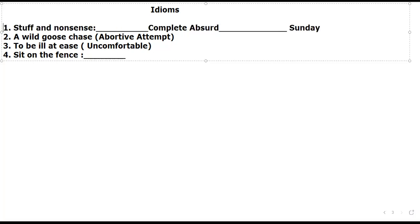To be ill at ease — you have to take a decision. If you don't take a decision, then you are sitting on the fence, avoiding making a decision. For example, the PDM coalition government is sitting on the fence, but they cannot do this activity for long.